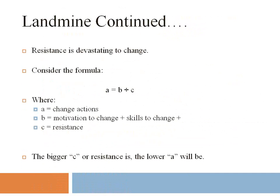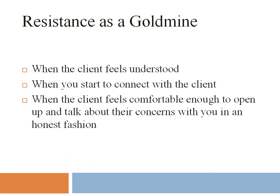Here's a formula showing the impact of resistance: A equals B divided by C, where A is change action. The larger C (resistance) is, the lower your change action will be. If B is 10 and C is 5, the product is 2. If B is 10 and C is 10, the product is 1. Resistance can be devastating to change, so it's critical that we understand it and have ways of dealing with it.